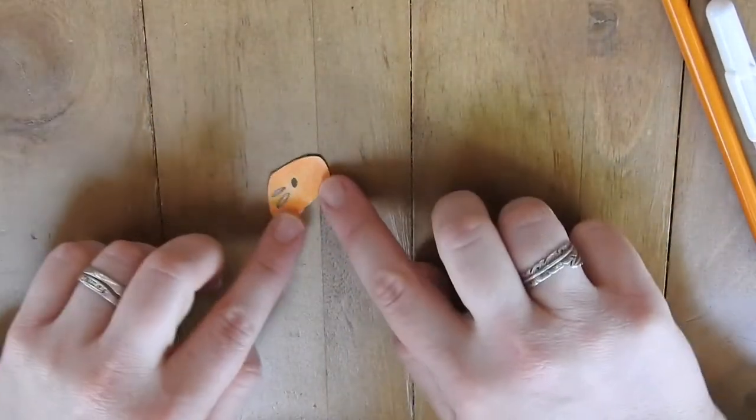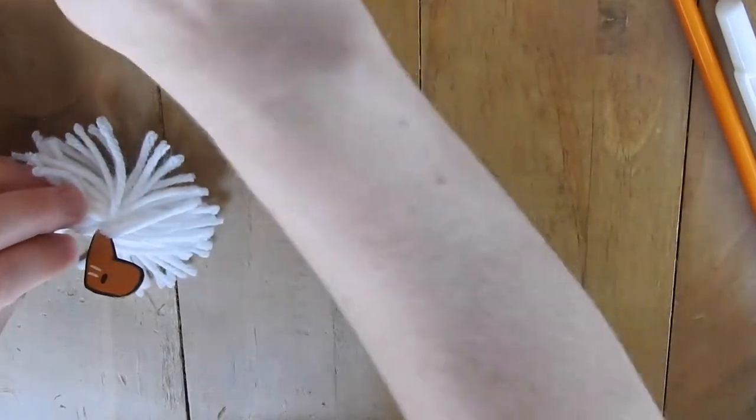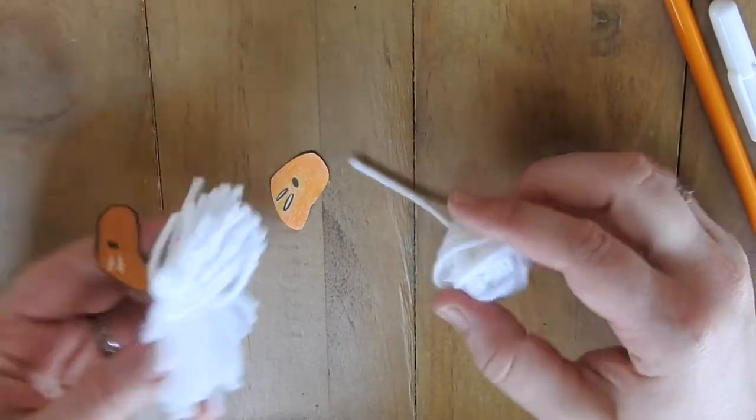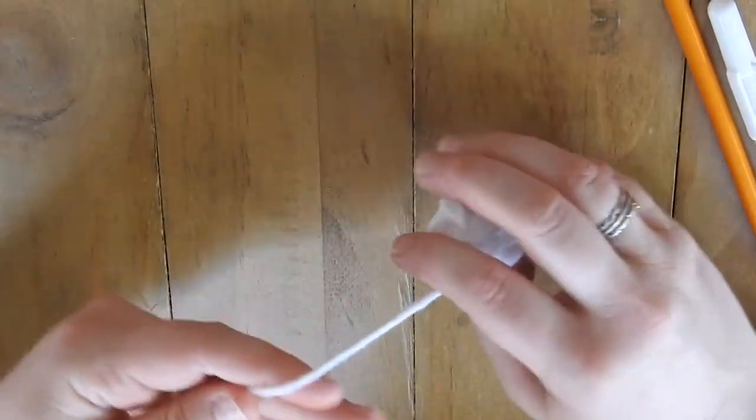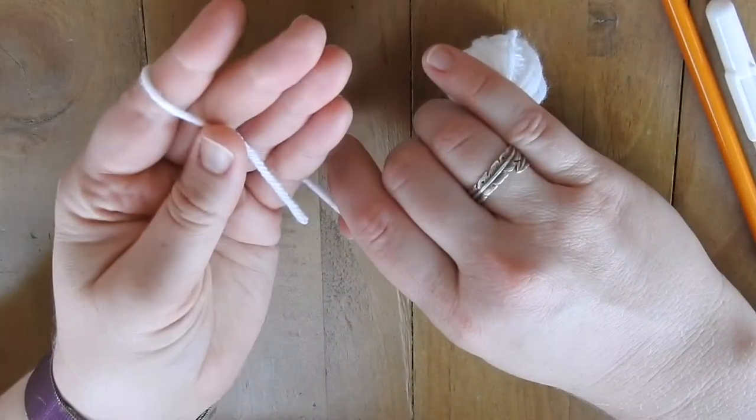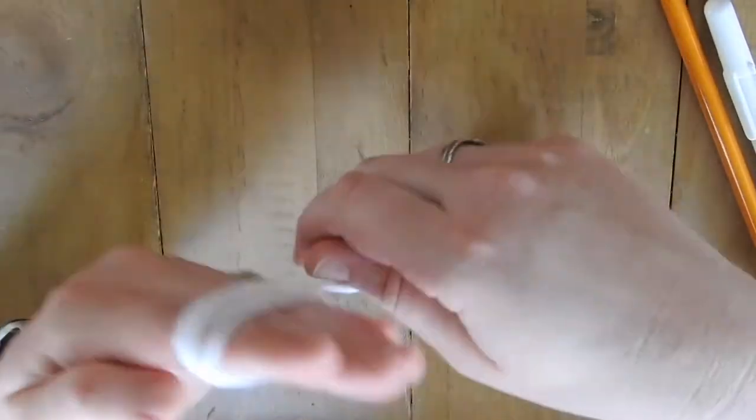Now that we've done the head, we need to do the skirt using a white pom-pom that we'll make with this little bit of white yarn. You're going to want to hold the yarn with your thumb and then wrap it around your four fingers about 20 times. Just keep wrapping until you reach 20 times around.